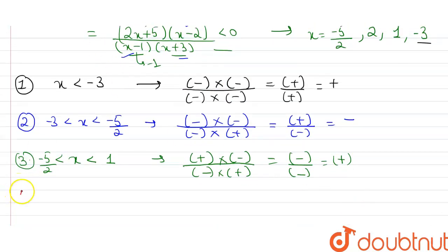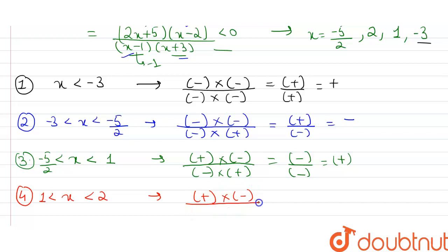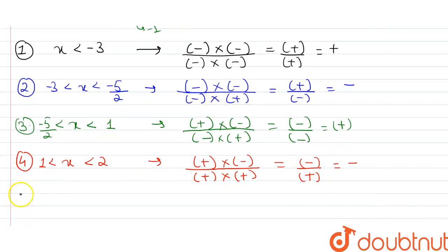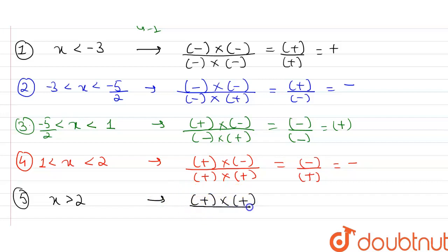For the fourth case, 1 < x < 2: substituting x = 1.5, (2x + 5) is positive and (x − 2) is negative, giving negative numerator; (x − 1) and (x + 3) are both positive, giving positive denominator. So the expression is negative — this satisfies the inequality. For the fifth case, x > 2: all four factors are positive, so the expression is positive — this does not satisfy the inequality.